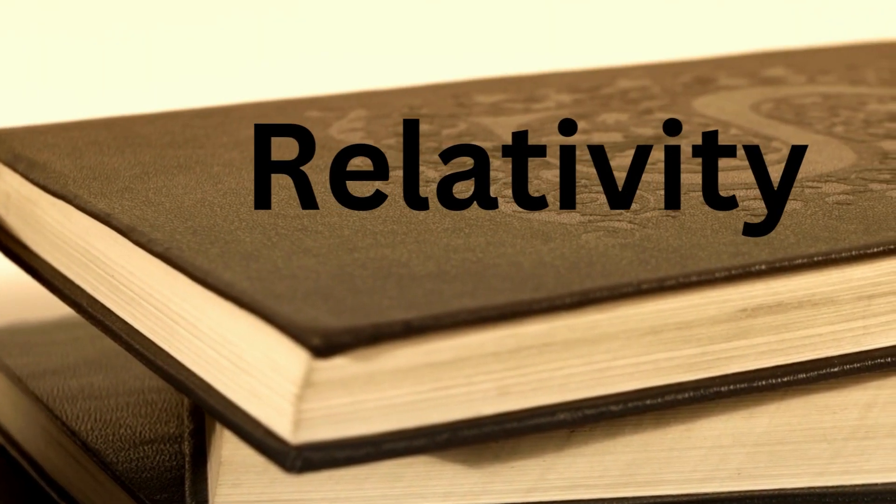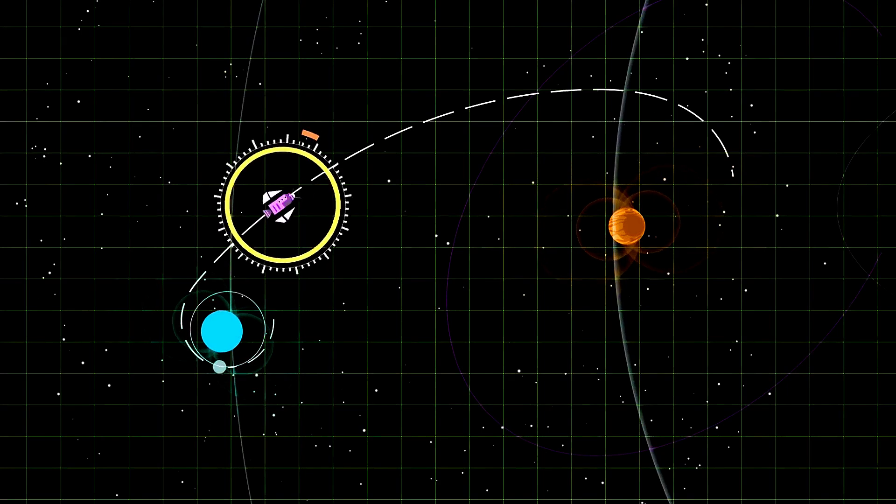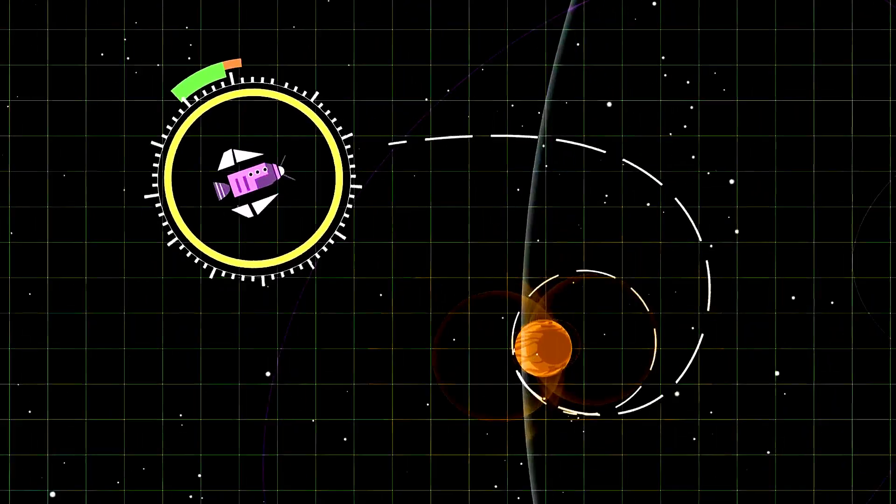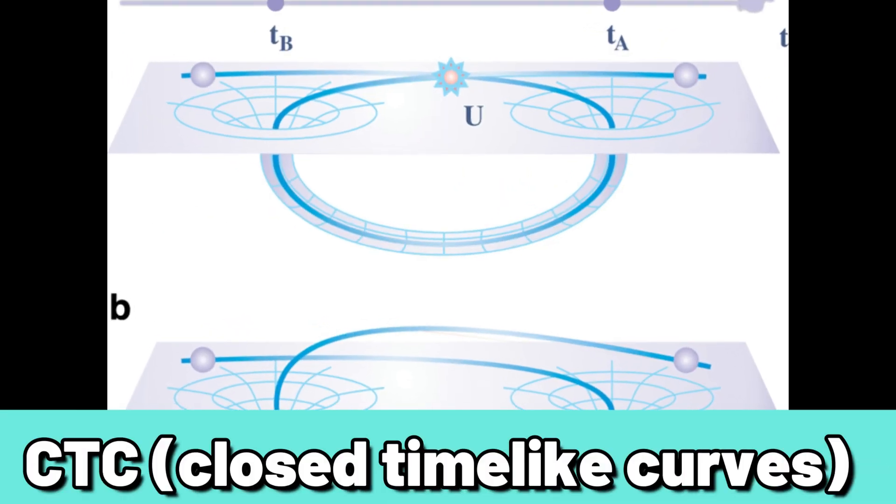Some solutions in general relativity do allow for time travel. Time travel may be possible if certain geometries of space-time or types of motion in space were possible. For example, CTC, closed time-like curves, is a concept that arises from the theory of general relativity.